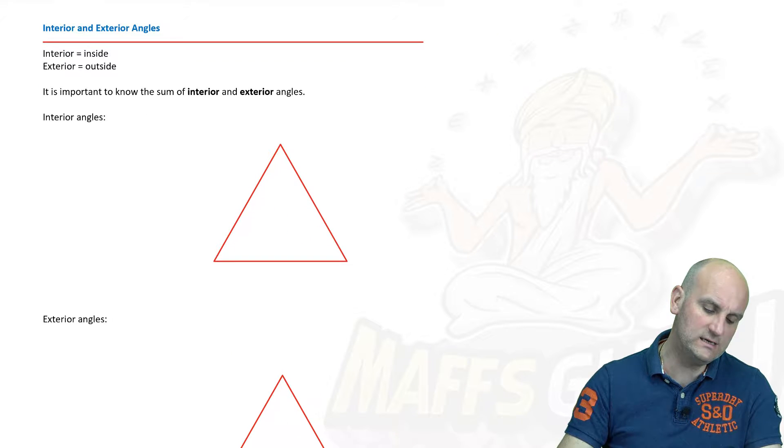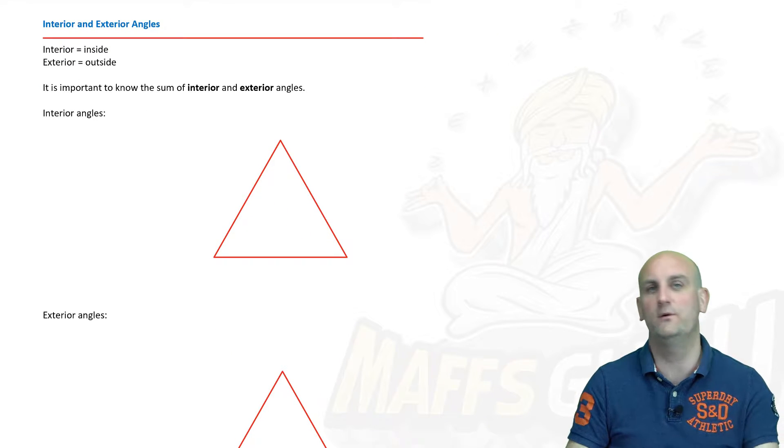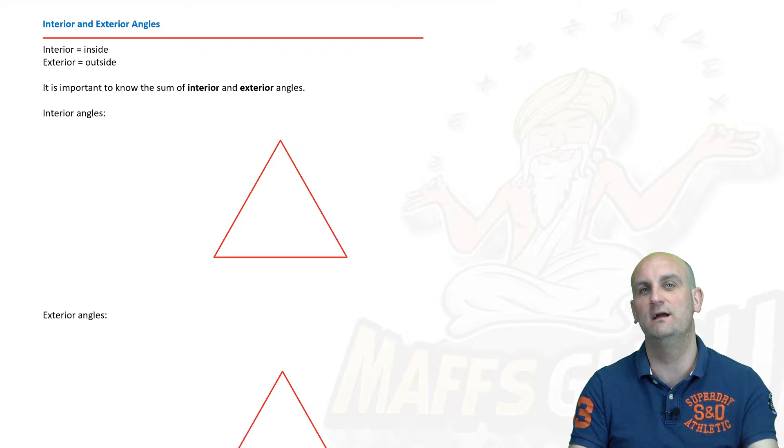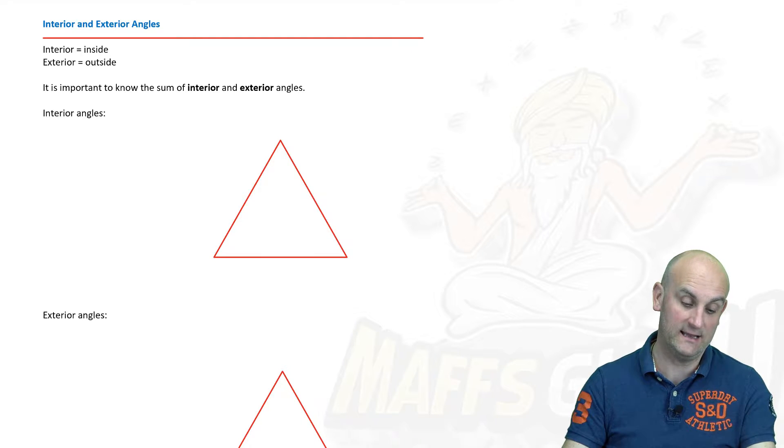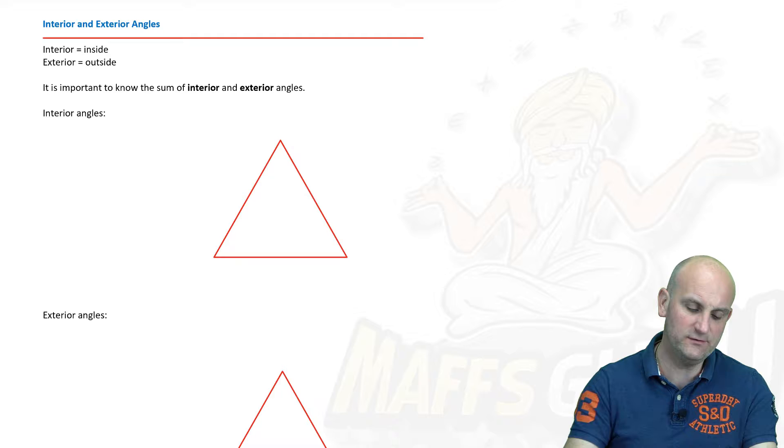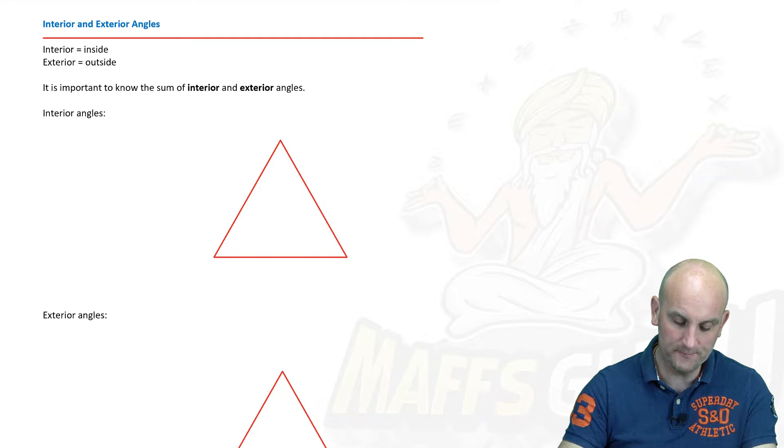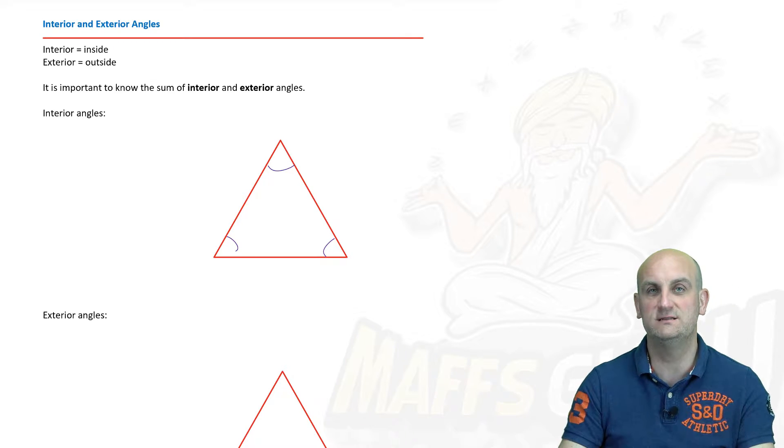But let's start interior and exterior. Hopefully, all of you are aware that interior means inside and exterior means, obviously, outside. Now, interior angles are those angles which are effectively inside my triangle. Now, there we go. There is an interior angle, there is an interior angle, and there is an interior angle.